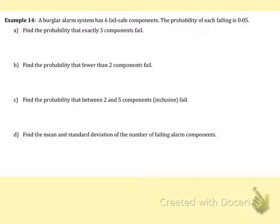The first part says find the probability that exactly three components fail. Because this is using the term exactly, we're using binomial PDF.